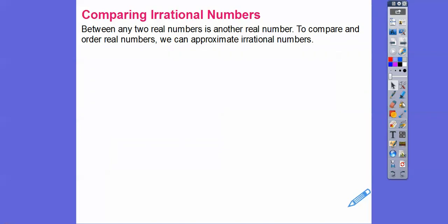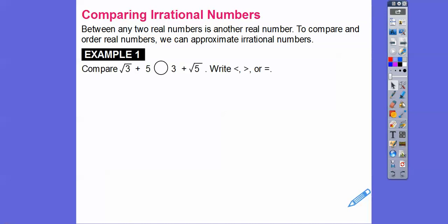Between any two real numbers, there's always another number. Even if we did like 1.1 and 1.2, well, 1.11 is between 1.1 and 1.2, and there's a number in between those guys. So to compare and order real numbers, we can approximate those irrational numbers.